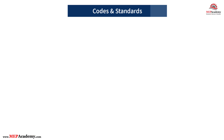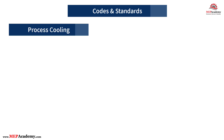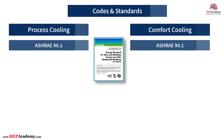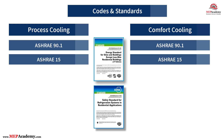Codes and standards governing process cooling versus comfort cooling: both types of cooling systems must adhere to industry codes and standards, though their regulatory frameworks differ. Process cooling standards include ASHRAE 90.1, the energy standard for buildings, which provides guidelines for energy efficiency in industrial processes, and ASHRAE 15, the safety standard for refrigeration systems, which governs refrigeration safety in process cooling applications.